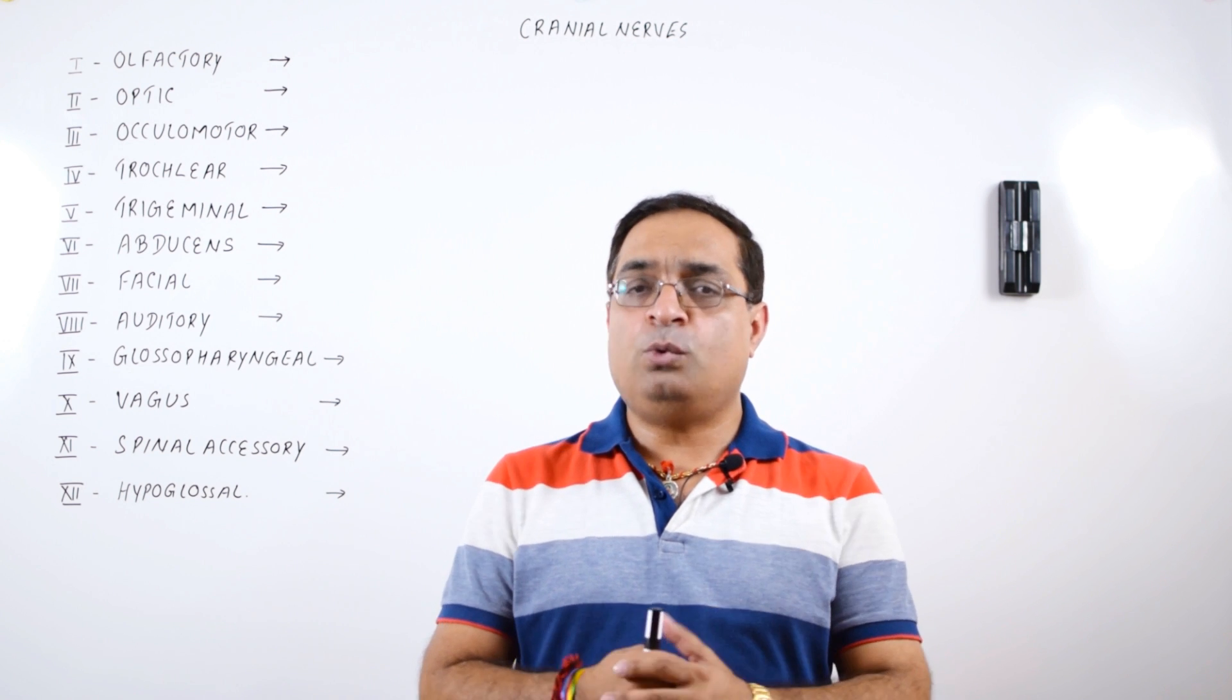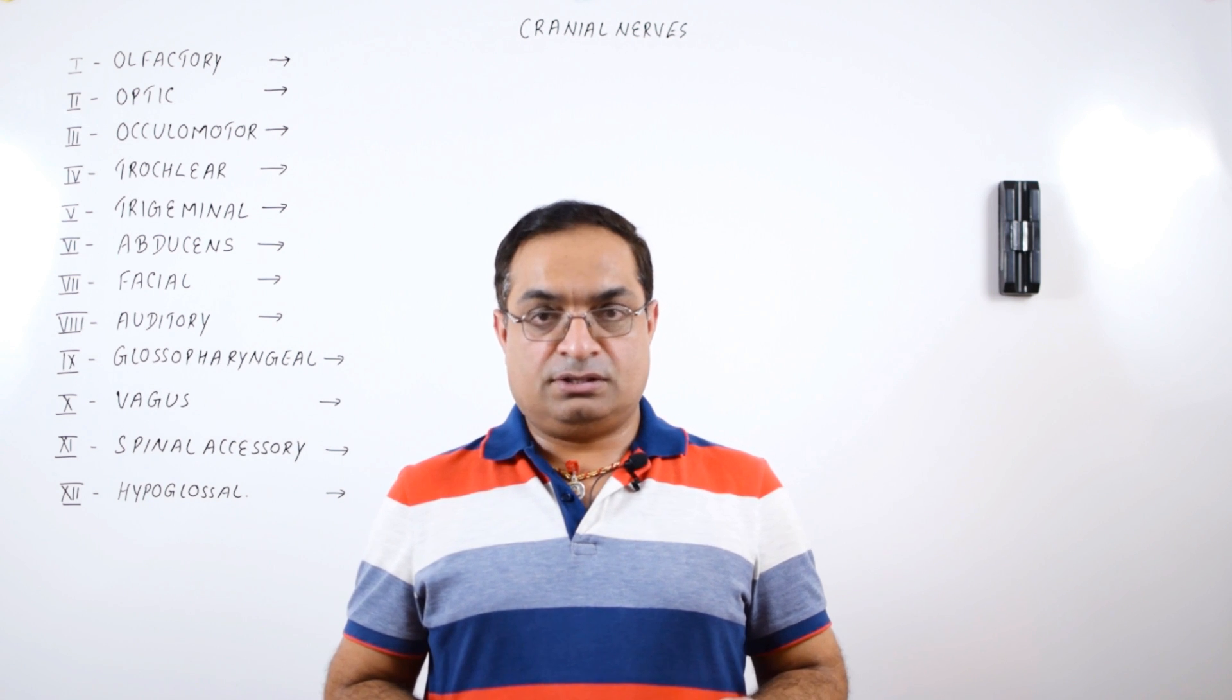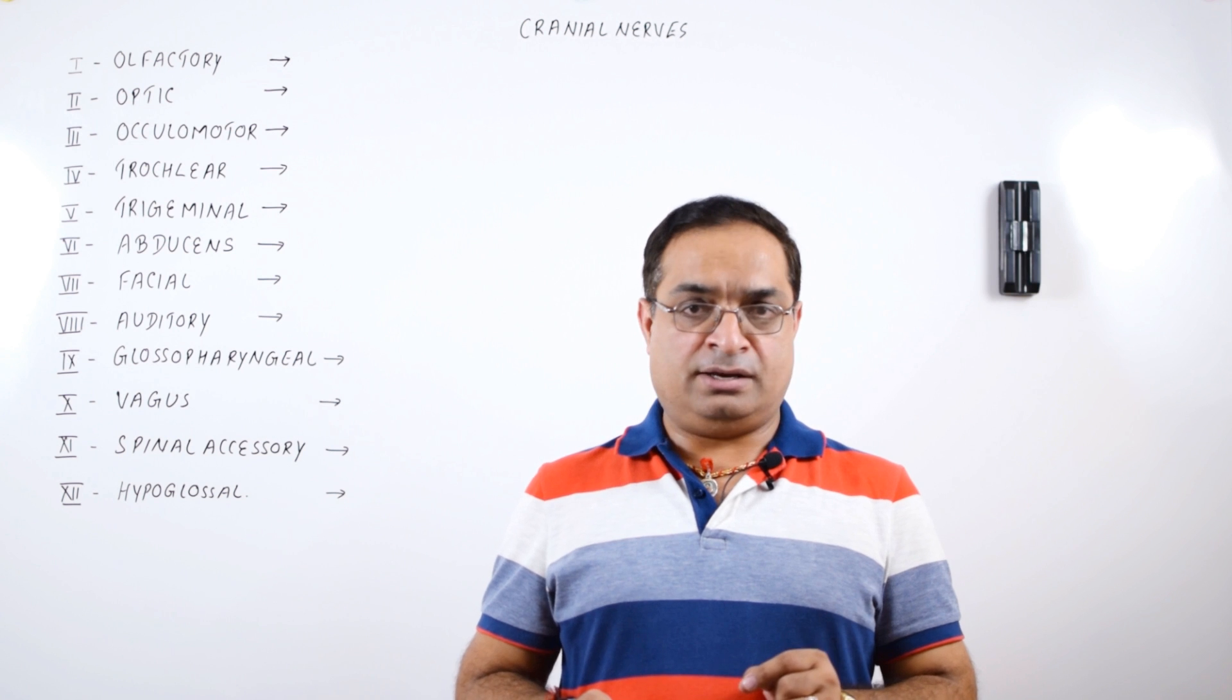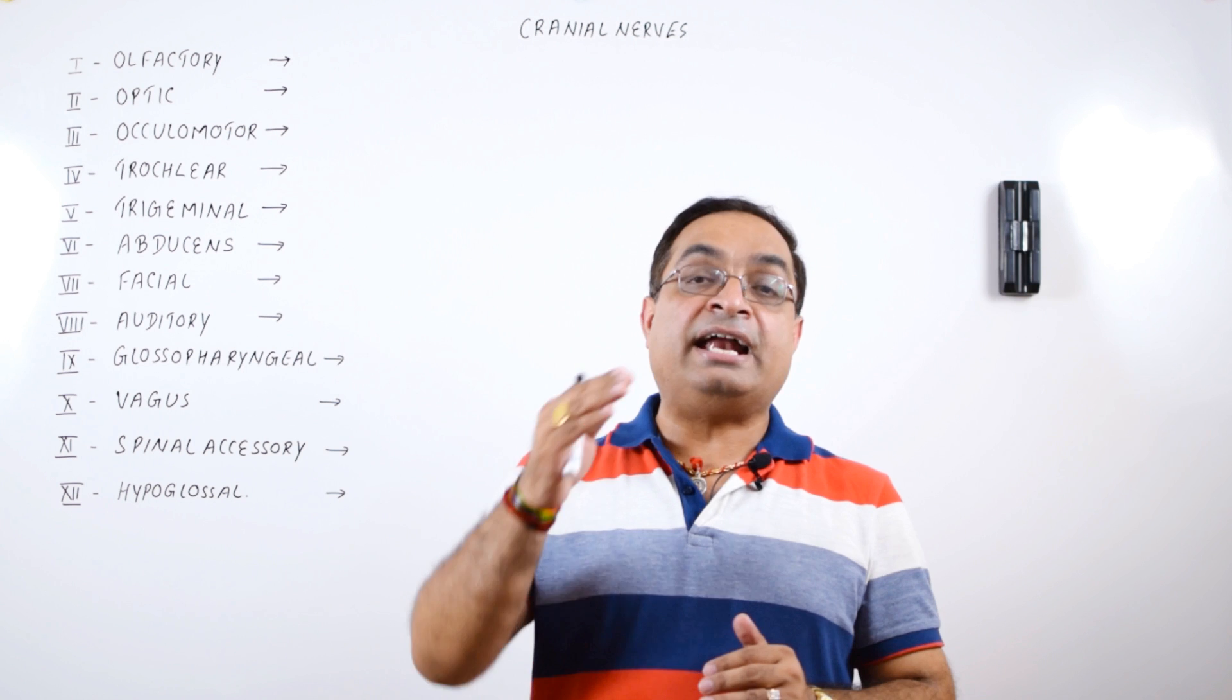First of all, let's understand what is the meaning of cranial nerves. Cranial nerves are the nerves which are attached to brain. Cranial is the brain box, so cranial nerves are the nerves which either enter brain or which exit from brain.